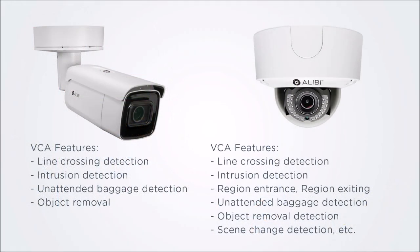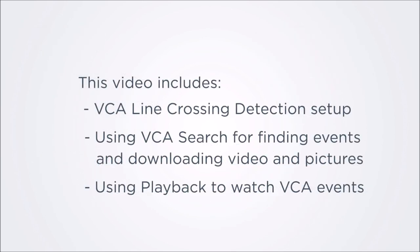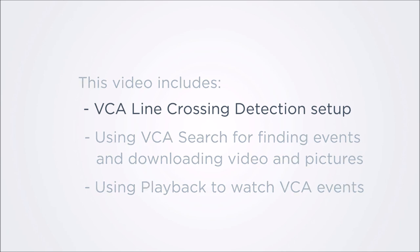Most VCA capable Alibi cameras can perform line crossing analysis. A micro SD card must be installed in your camera to retain the settings made in this procedure. In this video, we'll show you how to set up VCA line crossing detection.